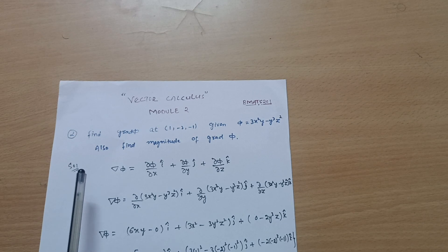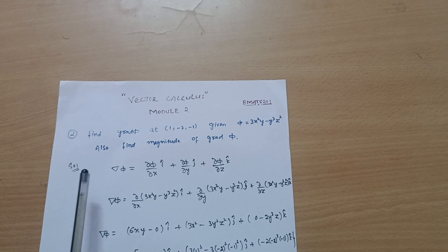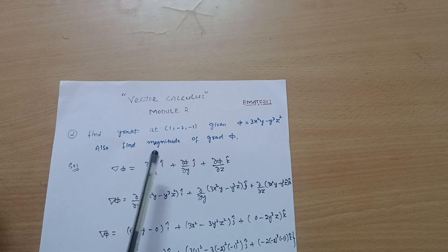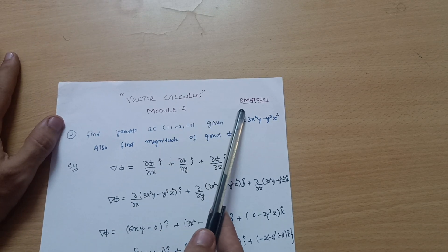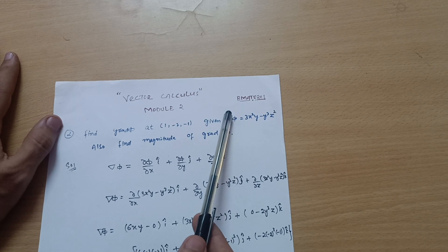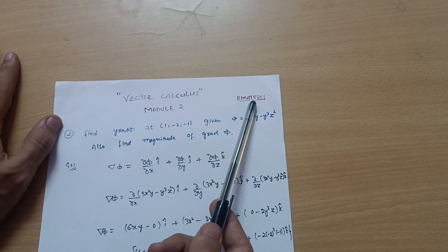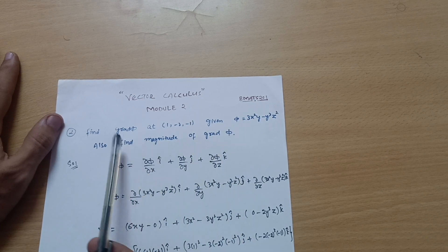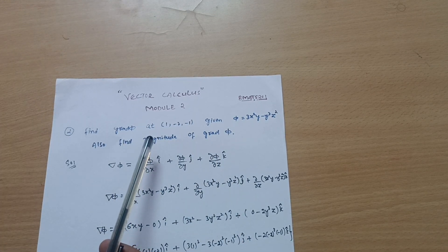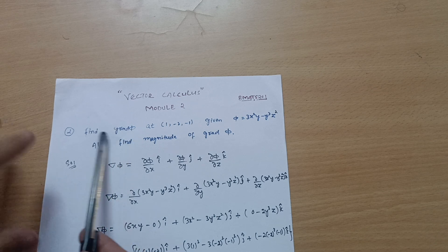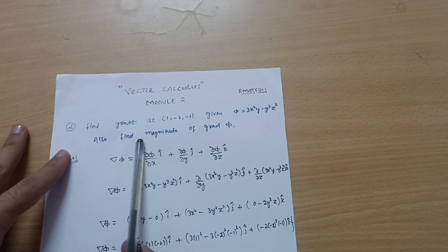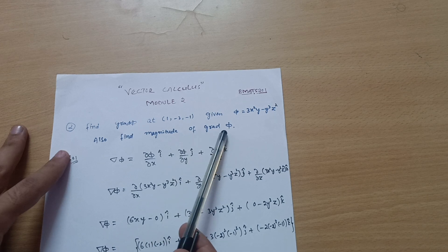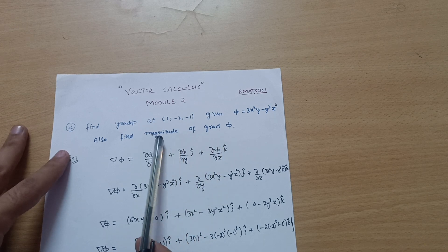Hello everyone and welcome back to my second lecture on vector calculus. We are discussing questions on vector calculus from the mathematical second semester VTU for CSE and allied branches — subject code BMAT201. In the last problem we calculated grad phi; in this question there is one extra thing: the magnitude of grad phi.